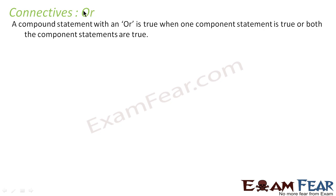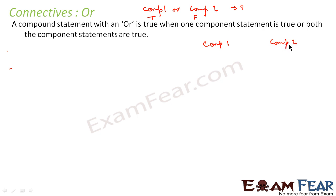Now we'll understand the connective OR. A compound statement with OR is true even if just one of the component statements is true. So if component statement one is true and component statement two is true, the whole thing is true. If one is false and the other is true, the whole thing is true. If one is true and the other is false, it is still true. Only if both statements are false is the compound statement false. So in case of OR, only when both conditions are false is the compound statement false; otherwise it is true.